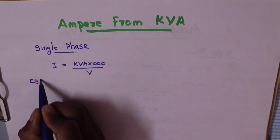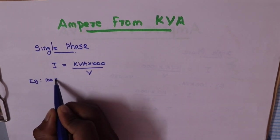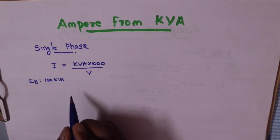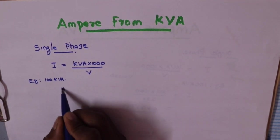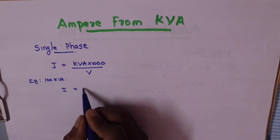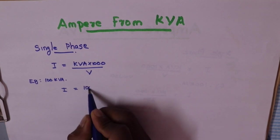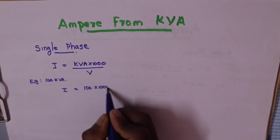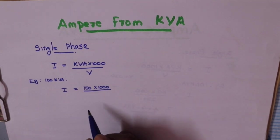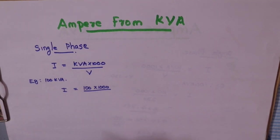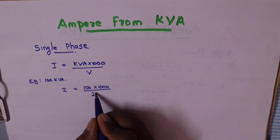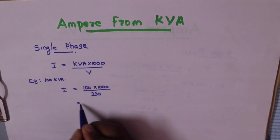We have a 100 kVA single-phase generator. We are going to calculate the load. The voltage is 230V.